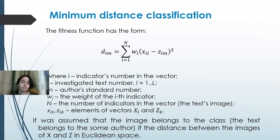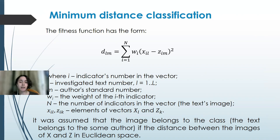For minimum distance classification to determine authorship, a method based on minimum distance to the standard was used. The text image includes 66 indicators, all shown in the previous figures and tables. Since the information content of each indicator in the pattern recognition problem differs, it was decided to use weighted indicators to increase recognition efficiency. The task is to find indicator weights w such that the recognition accuracy has the maximum value, with the fitness function taking the corresponding form.